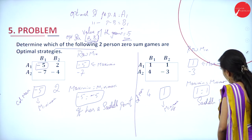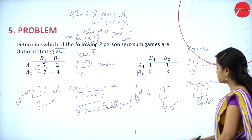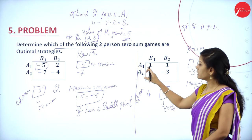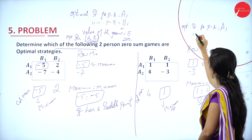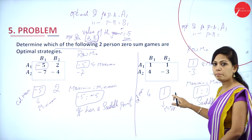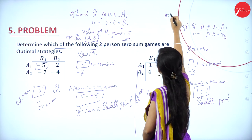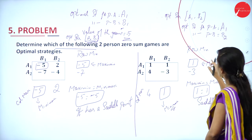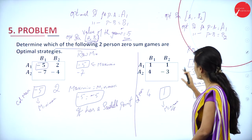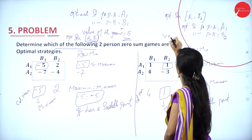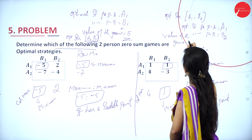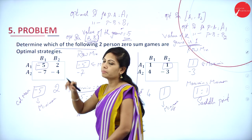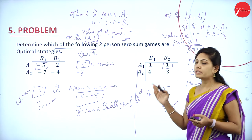Since 1 is the saddle point, optimal strategy for player A is A1 (maximin comes under row A1), and optimal strategy for player B is B2 (minimax 1 comes under column B2). Therefore, optimal strategy is A1, B2, and the value of the game is 1. So for both games, you can find the saddle point and value of the game using the same method.